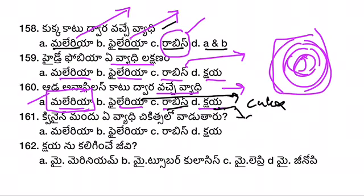Next question: Quinine is a drug used to treat which disease? The options are Malaria, Filaria, Rabies, and Kshaya. Quinine is used to treat Malaria. Hydroxy quinine is also used to treat Malaria.